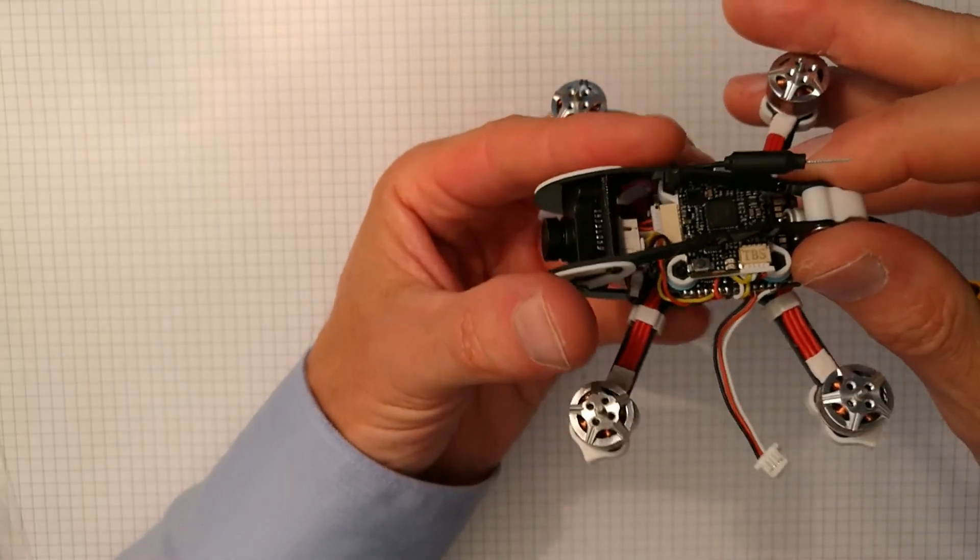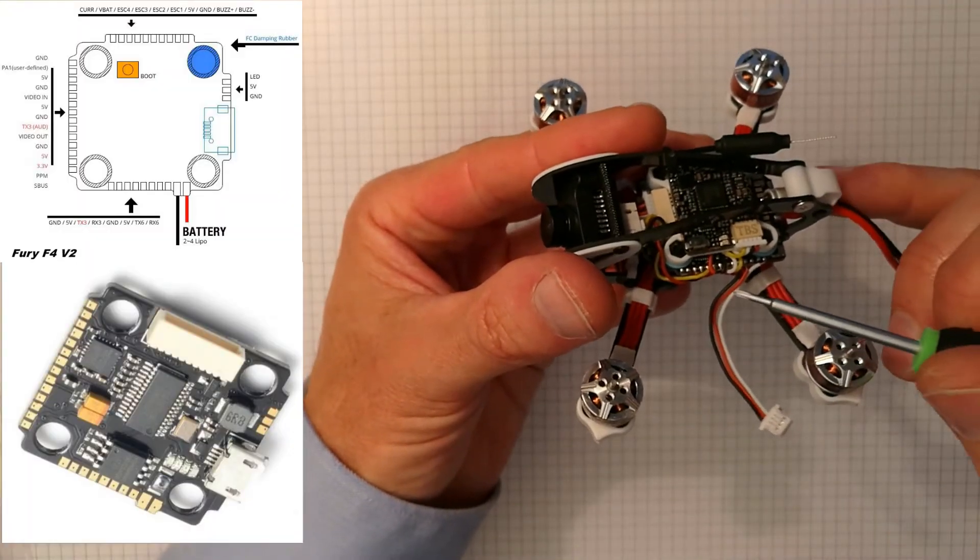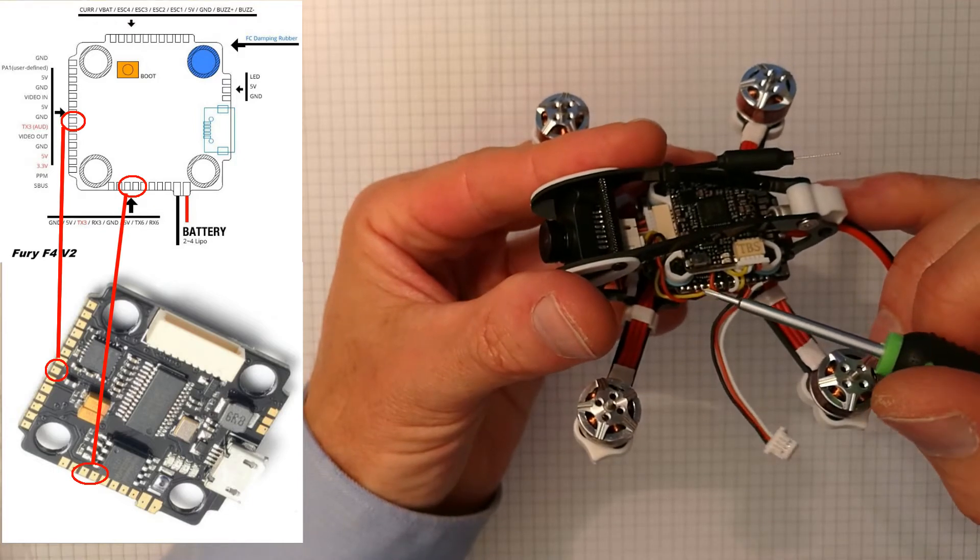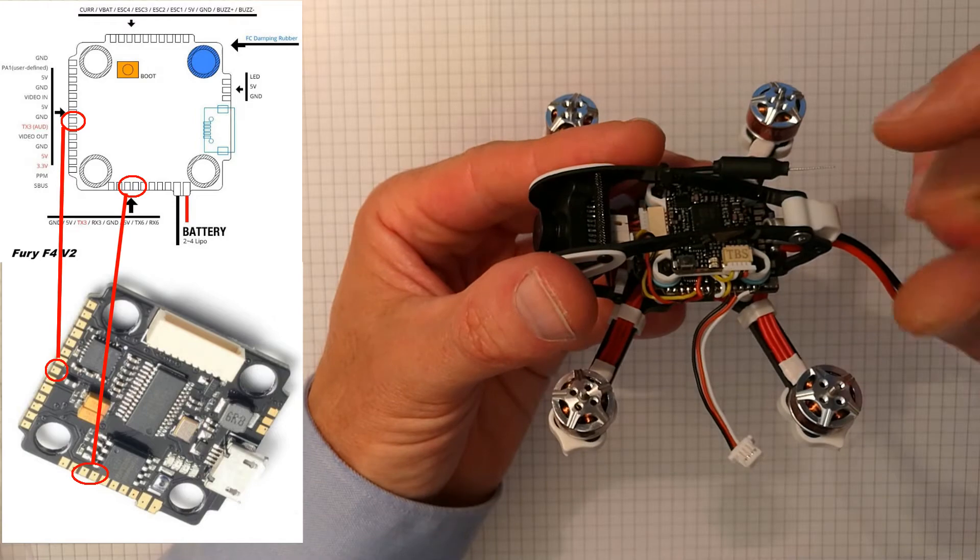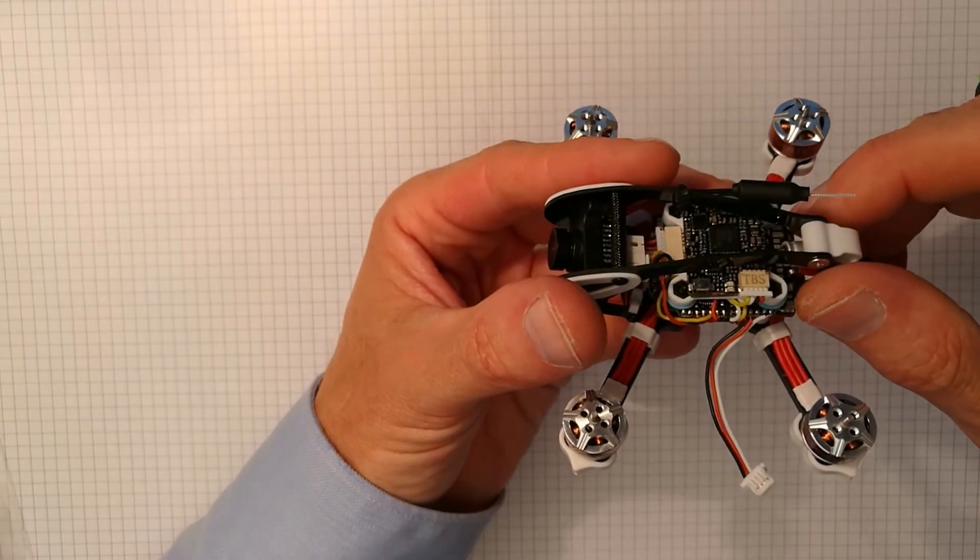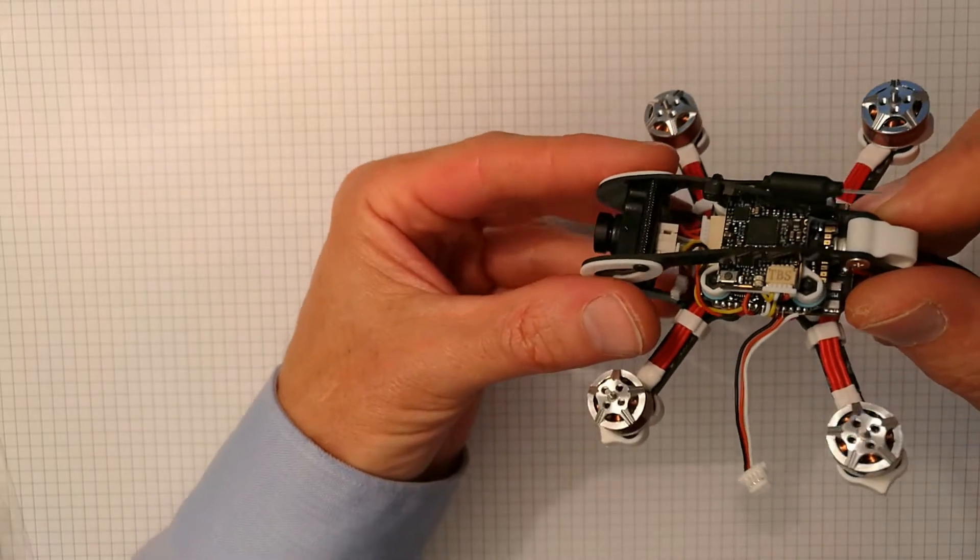Be aware of the fact that UART 3, which can be found on this side of the flight controller here, is used for TBS smart audio already. So you should take that into account when configuring the flight controller in Betaflight.